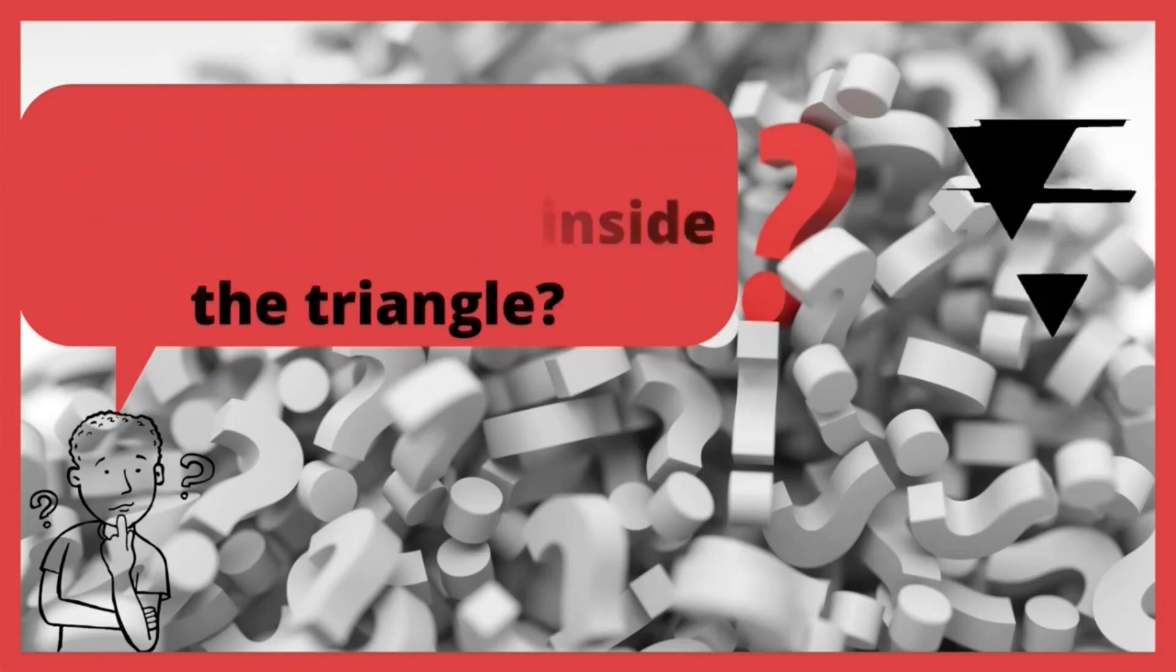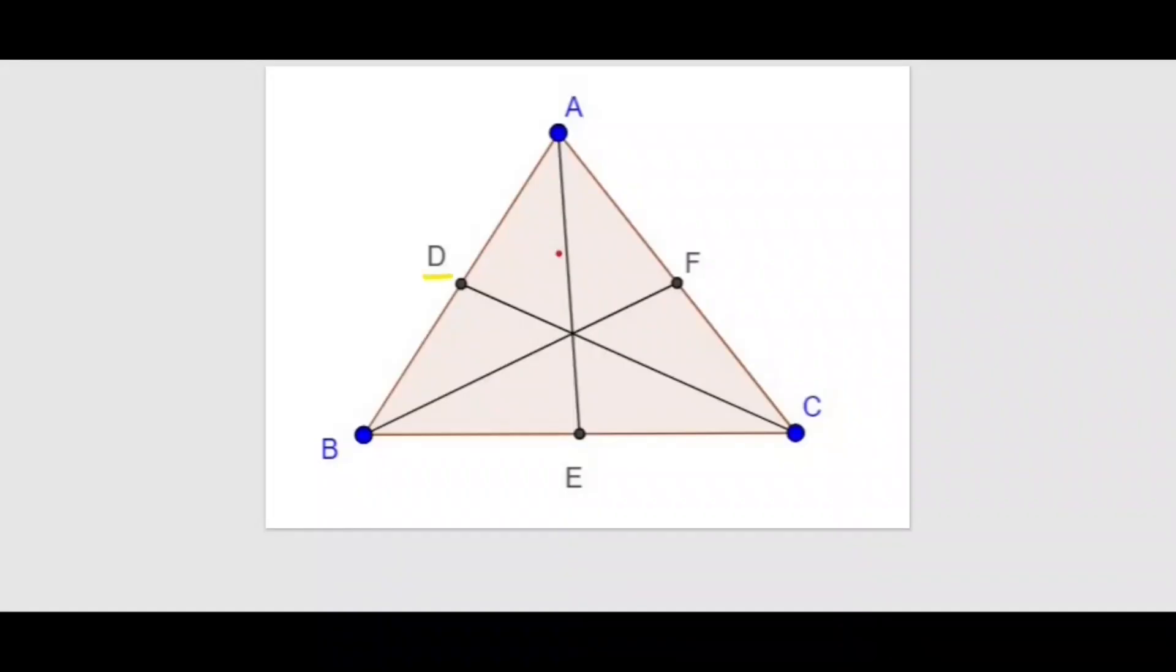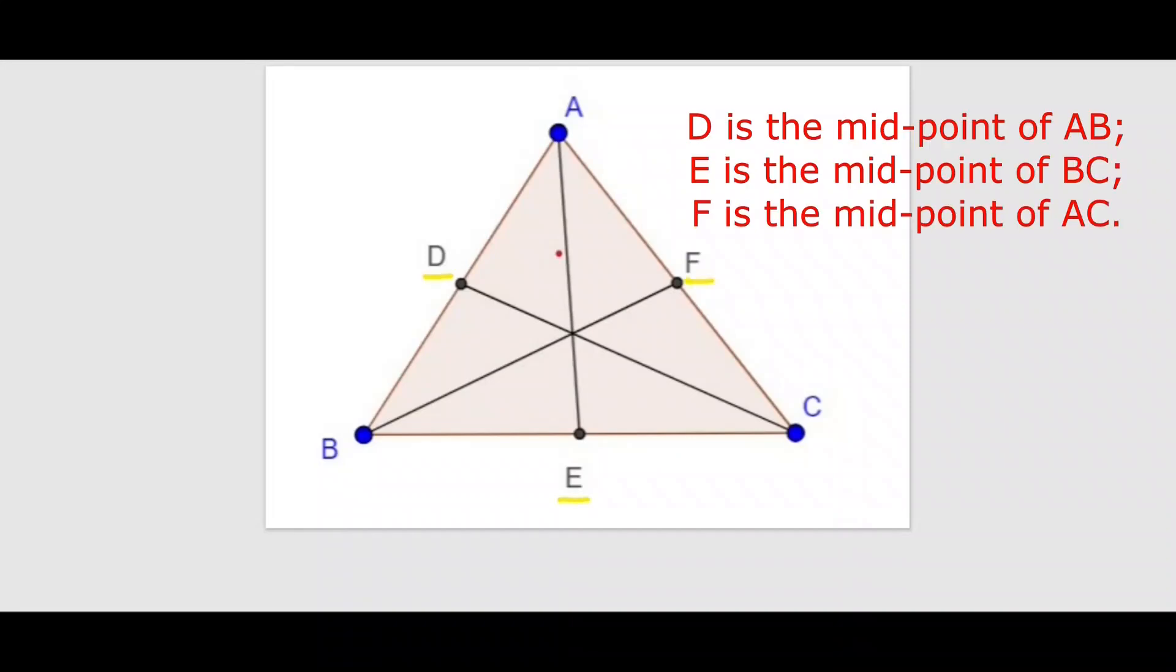Here in triangle ABC, we can see that D, E, F are the midpoints of AB, BC, and CA respectively. AE, CD, and BF are three medians of this triangle ABC. We can see here that all these medians are intersecting at just one point. Let's name that point as O.